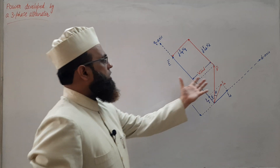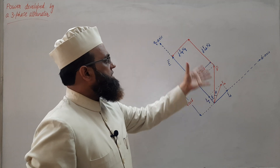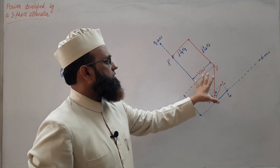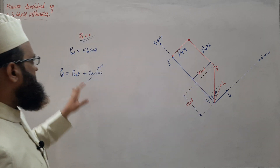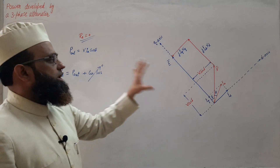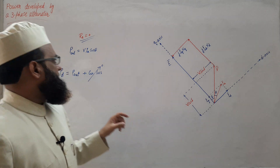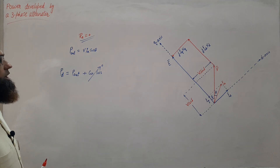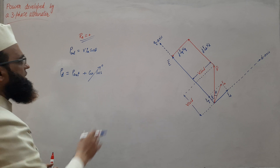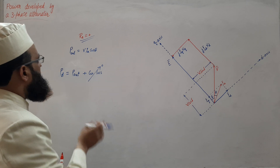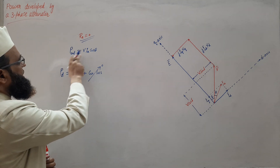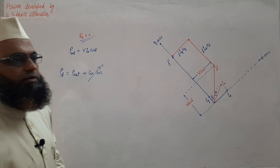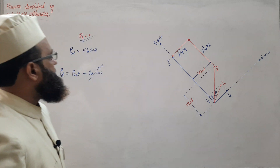If all quantities are represented in actual values, then V·Ia·cos(theta) gives per phase power output. In per unit quantities, this gives total power output directly. In actual quantities, multiply by 3 to get total three-phase power output.